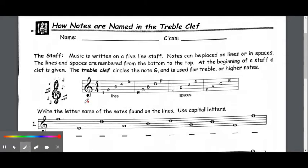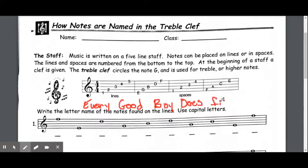For line notes we use the phrase every good boy does fine. Go ahead and write that on the bottom of this space right here on your paper and let's circle the first letter in every one of those words. And if you look carefully, every good boy does fine: E-G-B-D-F.